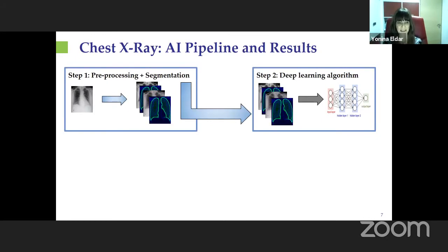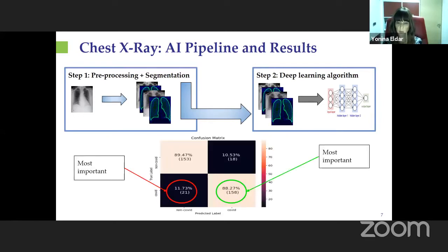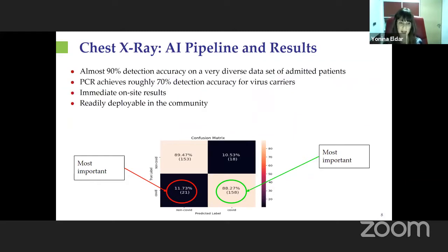Once we had the dataset, we started using processing methods to detect which patients are COVID. From a bird's eye view, we looked at different pre-processing techniques and segmentation, followed by deep learning methods. We get close to 90% detection rate using these techniques on the database we assembled. PCR achieves roughly 70% detection accuracy for virus carriers in Israel, so 90% detection is very encouraging. The results are immediate, require only software, are readily deployable, very cheap, and can be done in the community.